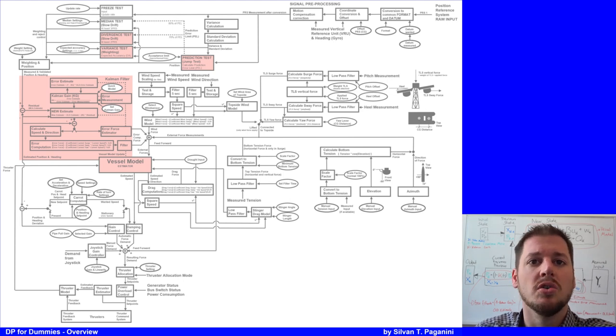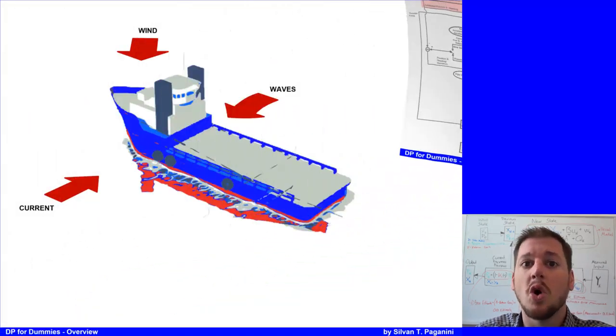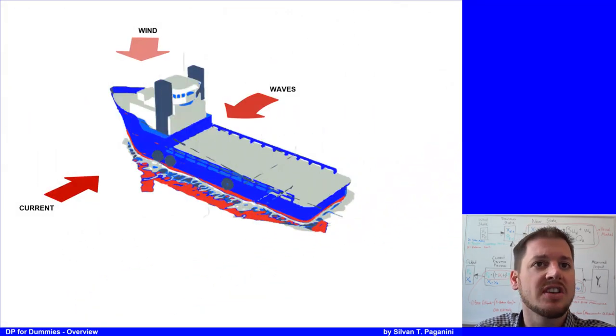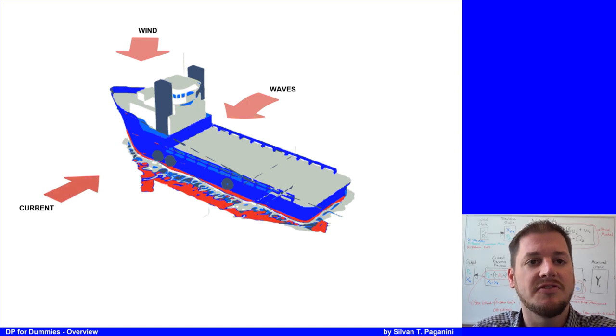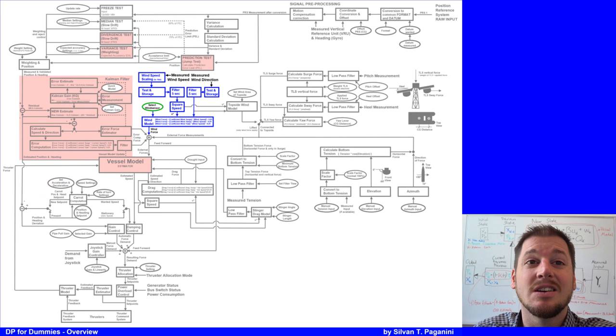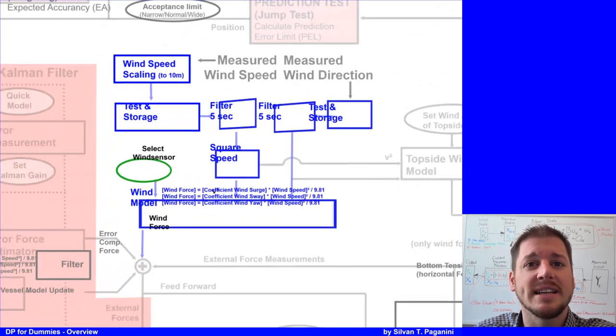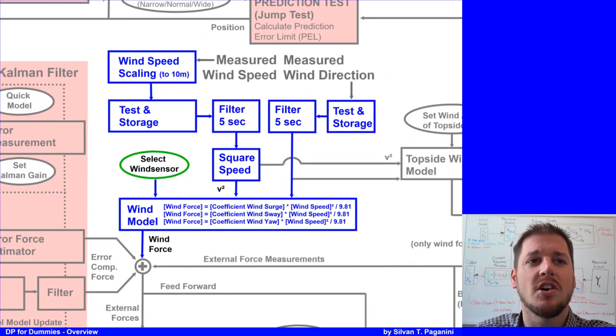As we all know a seagoing vessel is subject to forces from wind, waves, current as well as some forces generated by the propulsion system. The wind is the only environment force which is measured and used by the DP system to calculate with help of a wind vessel model the wind force.